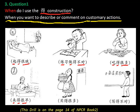他来得很早。下一个：买得很多，buy a lot of。然后是：写得不对，because 这个汉字 is not correct。写得不对。